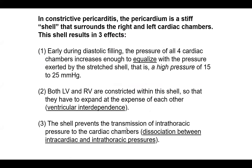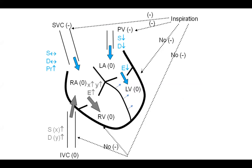That's a very important feature, and it actually explains the discordance. Those two processes — ventricular interdependence and dissociation of transmission of respiratory pressure — explain ventricular interdependence and the discordant pressure patterns we observe.